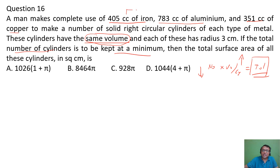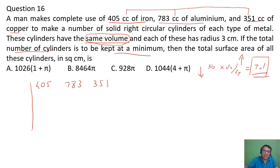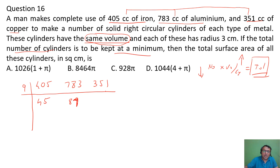That means the volume per cylinder has to be the HCF of these three numbers — the highest common factor — because it has to be a factor of these numbers for an integer number of cylinders. Looking at the numbers: all are multiples of 9. So 9×4=36, 9×5=45, 9×8=72, 9×7=63, 9×3=27, 9×9=81.